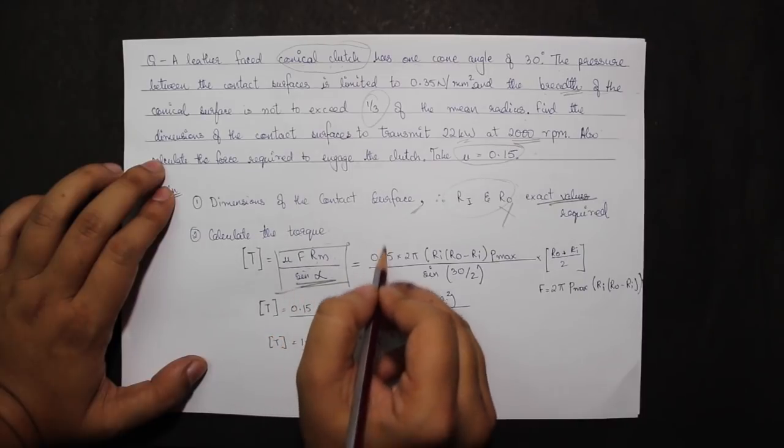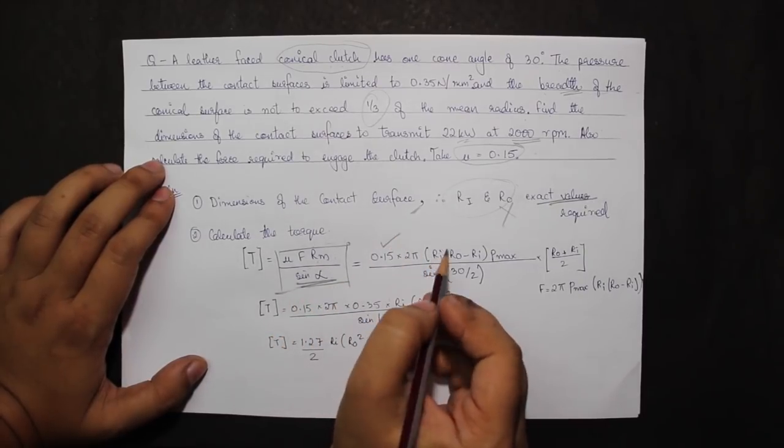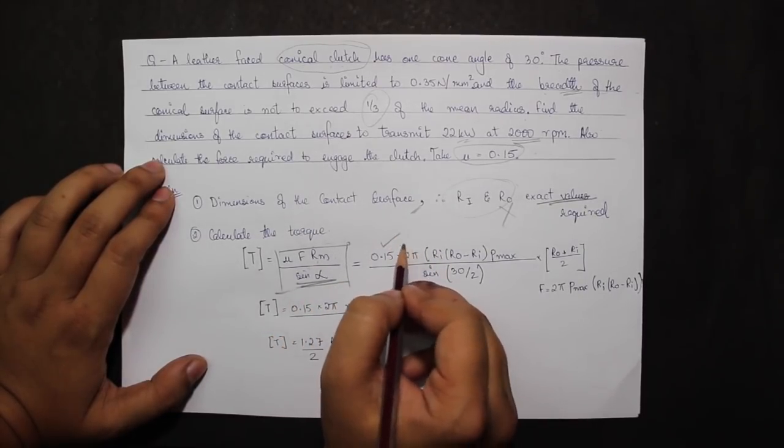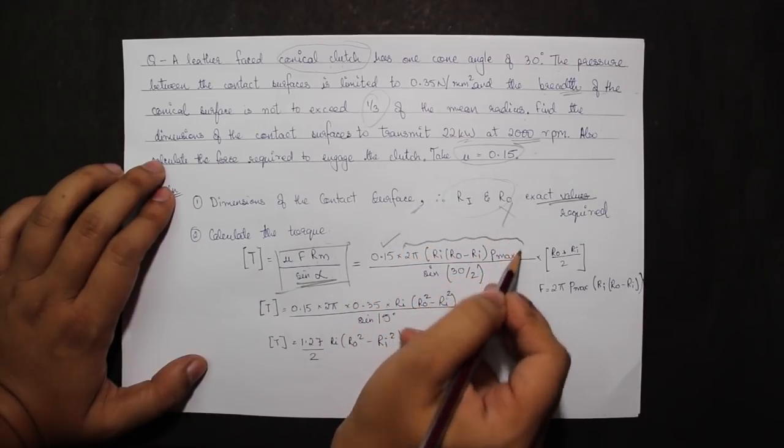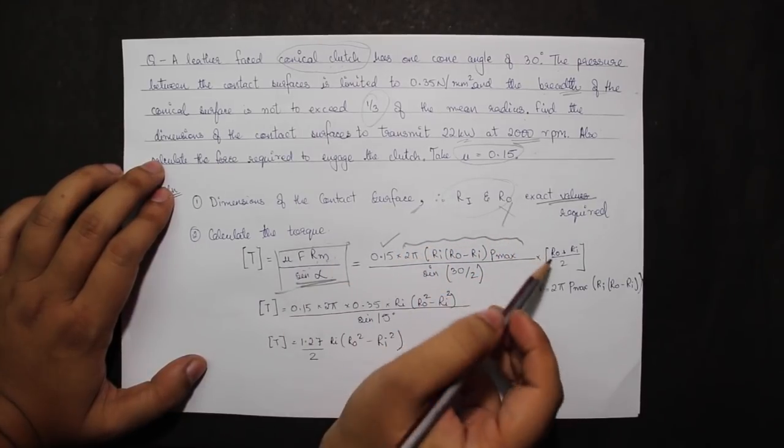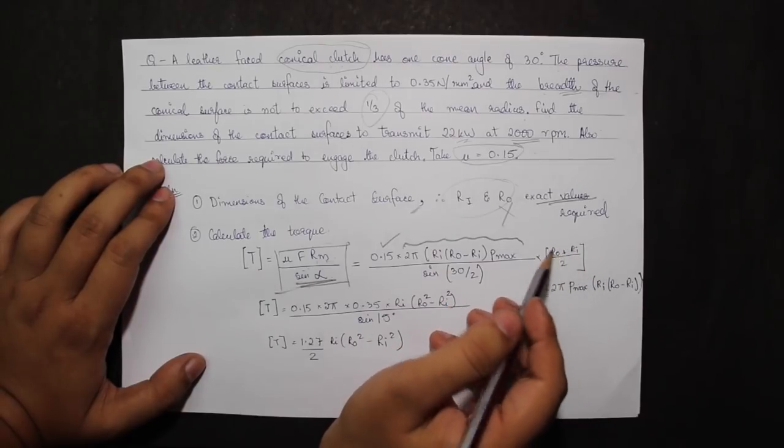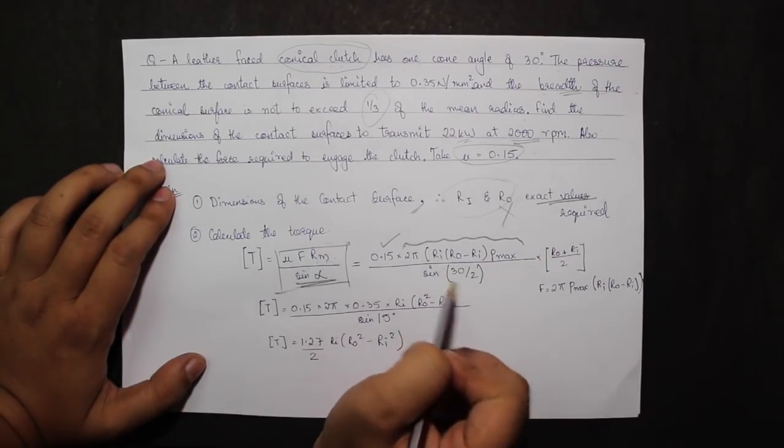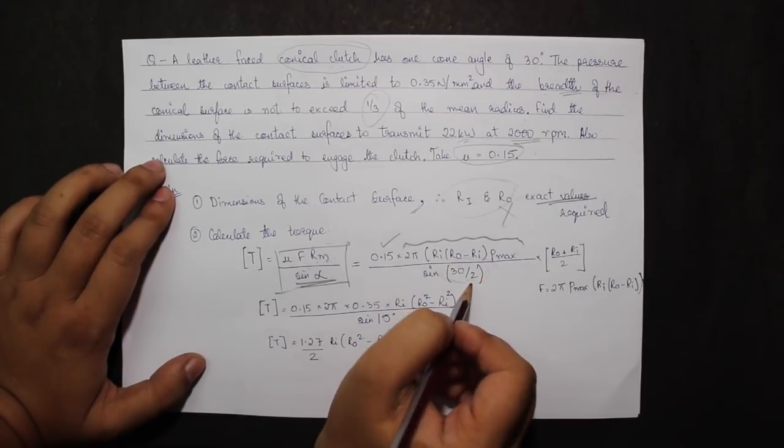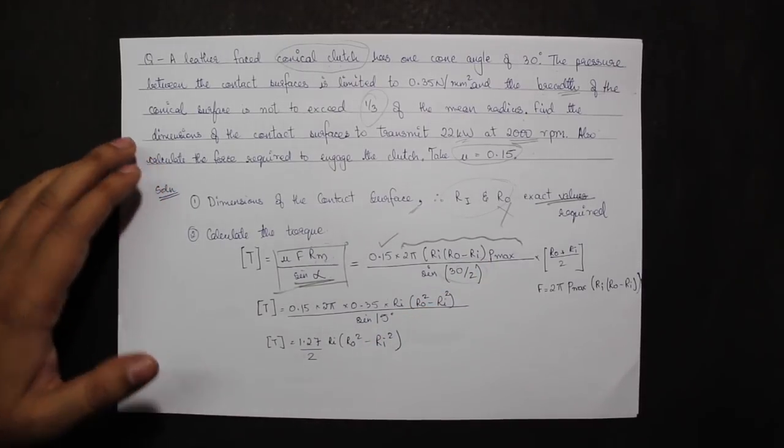Mu is given as 0.15. F as I know is 2 pi p max ri r0 minus ri. Rm also remains just same as before.